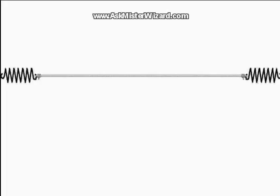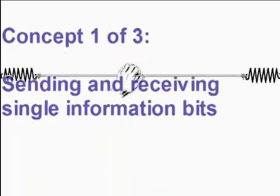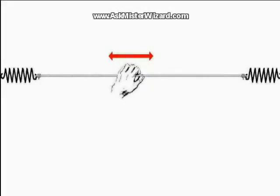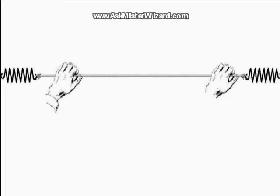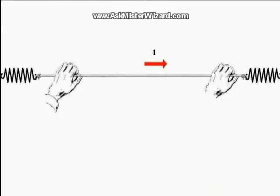We'll leave those details to the engineers, and we'll just talk about the concepts here. If you grasp the rope, as shown in this illustration, you could feel any vibrations passing through it, or you could generate vibrations of your own by tugging on it, pulling to the left or to the right. You might agree that if you tug the rope to the right, you're sending a message that says 1, whereas if you tug the rope to the left, you're sending a message that says 0.